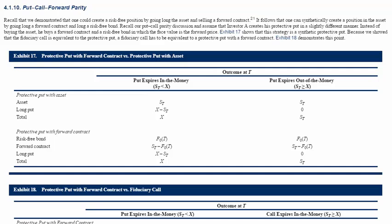A protective put with an asset is a combination of an asset and a long put, and a protective put with a forward contract is a combination of a risk-free bond, a forward contract, and a long put. Instead of buying the asset, he buys a forward contract and a risk-free bond in which the face value is the forward price.